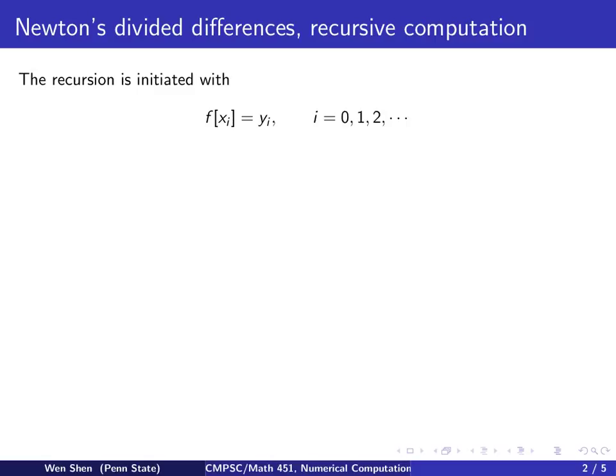The recursion is initiated with the following. Given the data set xi and yi, I write f at xi simply equal to yi, and I go through all the data points. This will be n plus 1 points.